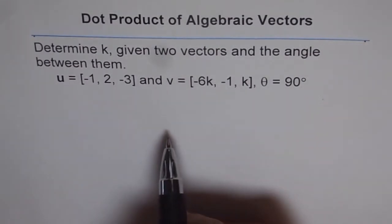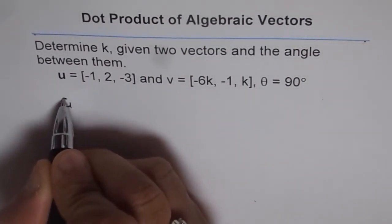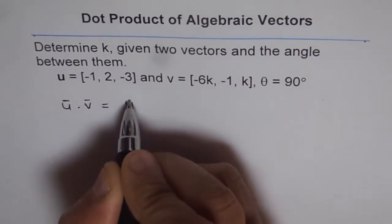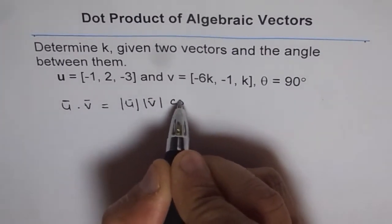We can find the dot product in two different ways. One is u · v = |u||v| cos θ.